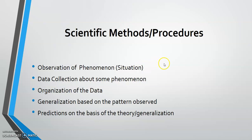The fourth method is generalization based on the pattern observed. After identifying a pattern or trend, you formulate a law. Based on the pattern, we come out with the law of demand and the law of supply. The law of demand states that, all other things being equal, the higher the price of the commodity, the lower the quantity demanded, and the lower the price, the higher the quantity demanded. The law of supply states that, all other things being equal, the higher the price, the higher the quantity supplied, and the lower the price, the lower the quantity supplied.